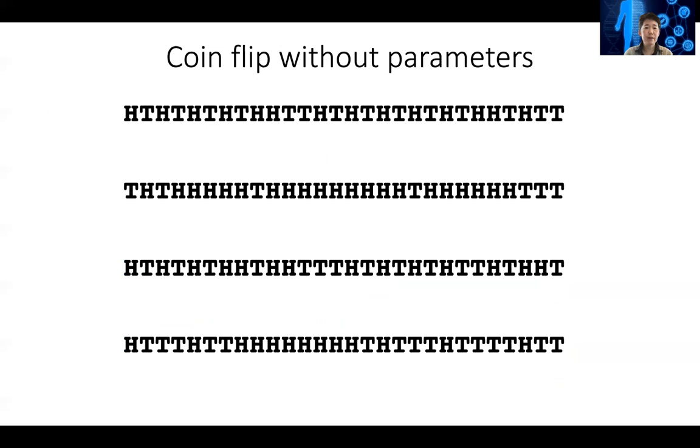So supposedly, we have a string of coin flips, and we know that there's a fair coin and a bias coin, but we don't really know how the parameters are really set up. What's their transition, what's their emission probability.